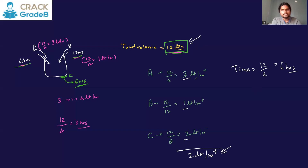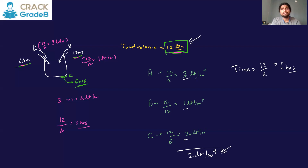If all three are activated together, the tank will be filled in 6 hours. This is the basic type of question to prepare for. Once you understand the LCM method, you can handle little variations — one pipe starting later, the emptying pipe being closed in between, or pipes activated in alternate patterns. We'll see those variations and previous year questions.